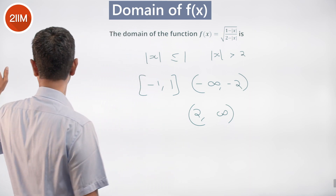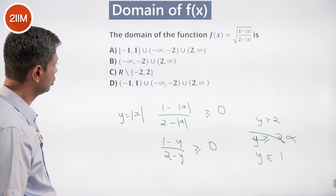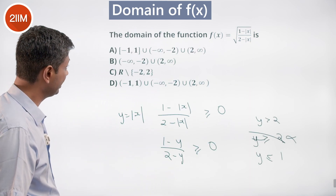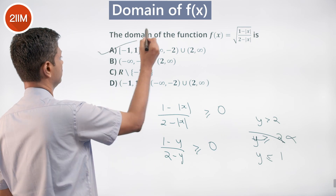So the domain is (−∞, −2) ∪ (2, ∞) ∪ [−1, 1].